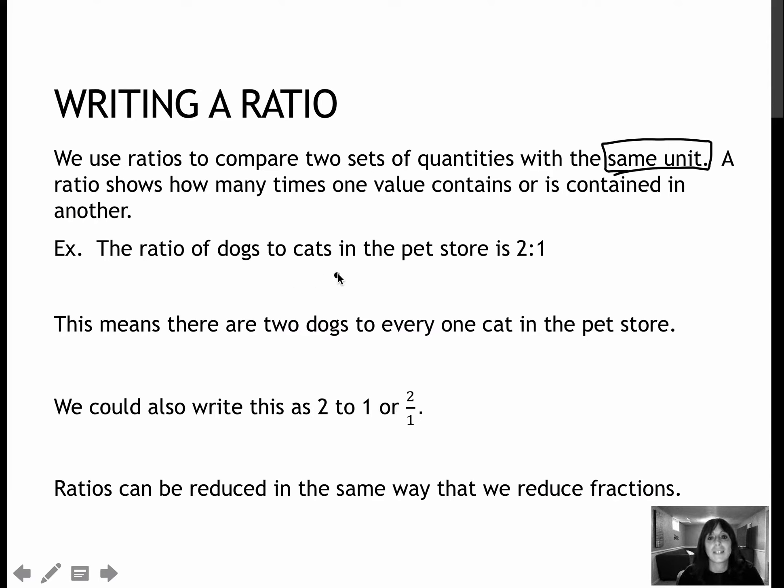So if I said the ratio of dogs to cats in a pet store is two to one, this colon is said as two. So two to one means that there are two dogs for every one cat in the pet store. For instance, if I had four dogs then I know I must have two cats in order for them to be in the two to one ratio.